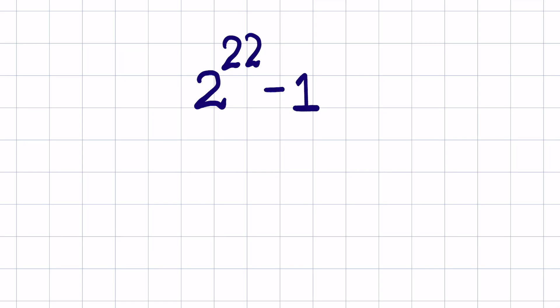2 raised to the power 22 minus 1. Let's evaluate without using a calculator. 2 raised to the power 22 can be written as 2 raised to the power 11 times 2, minus 1.